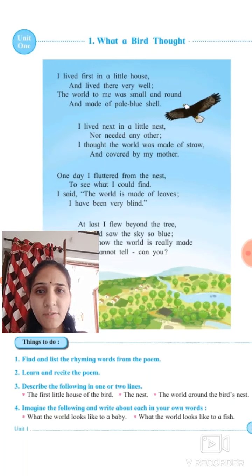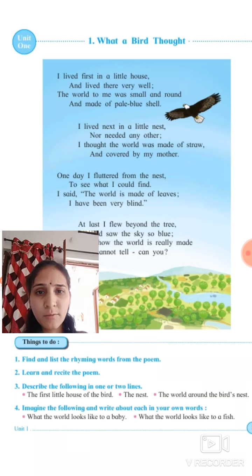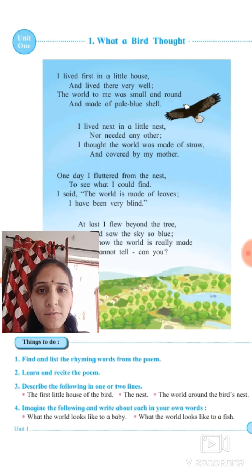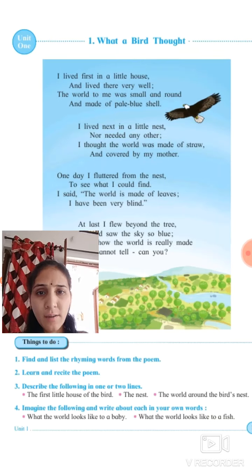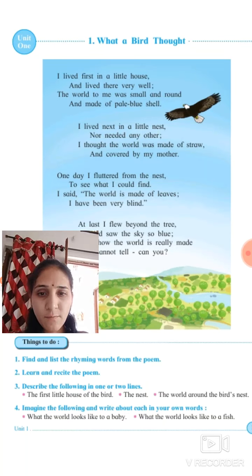Let's see our first stanza: 'I live first in the little house and live there very well. The world to me was small and round and made of pale blue shell.' In this first stanza,